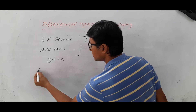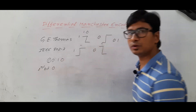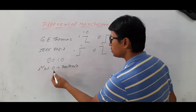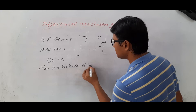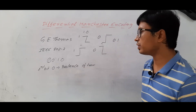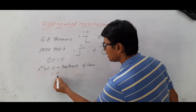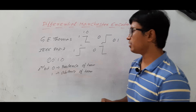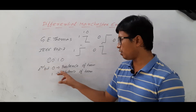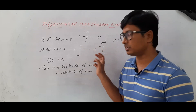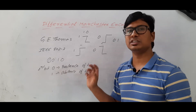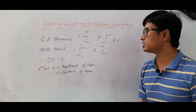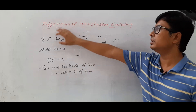From the second bit onwards, if you get a zero, there is a presence of transition. If it is a one, then it is an absence of transition. I will discuss the meaning of presence of transition and absence of transition with an example. Don't worry. So in J.E. Thomas, we will now discuss how to represent differential Manchester encoding, then we will go for IEEE 802.3.